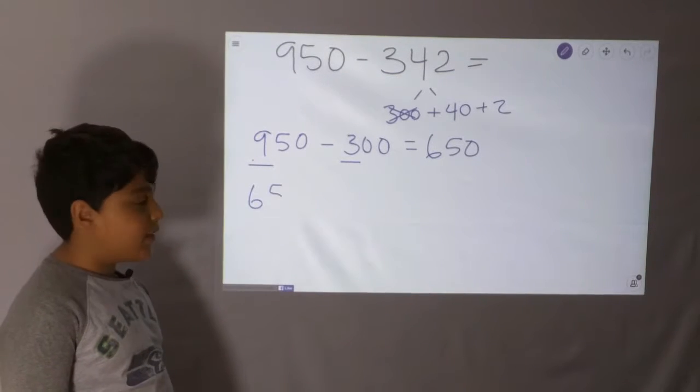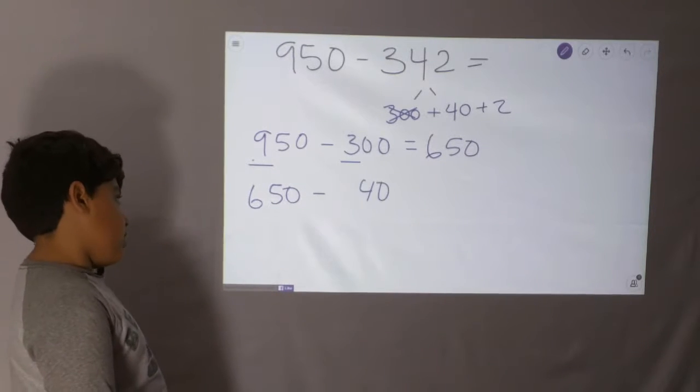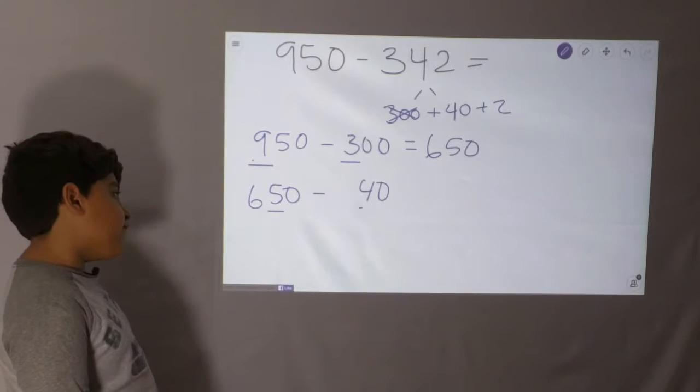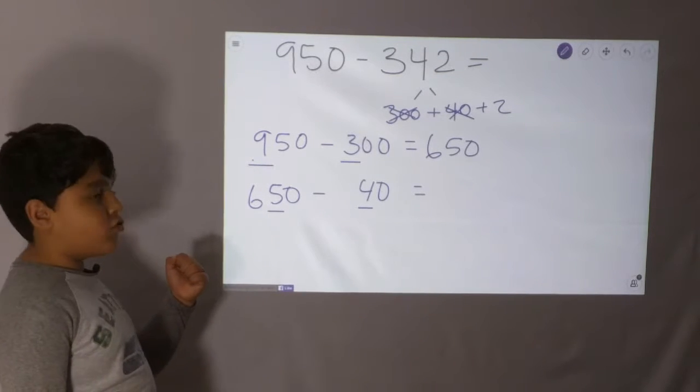650. Now we're going to do the 40. 650 minus 40. So, 610.